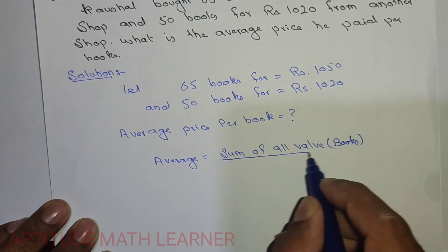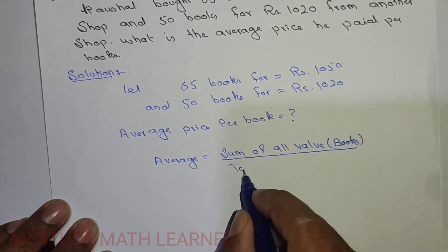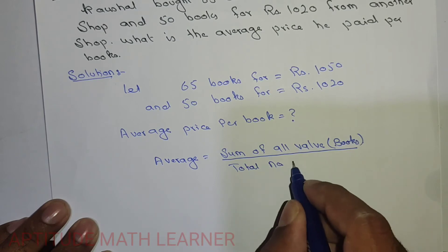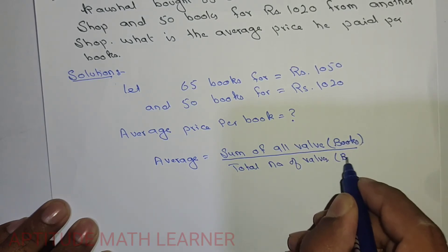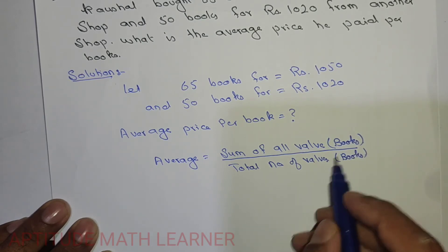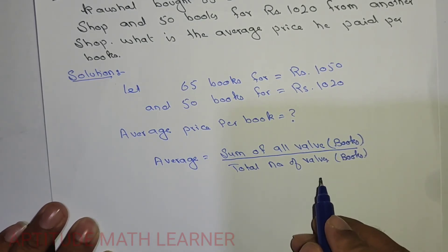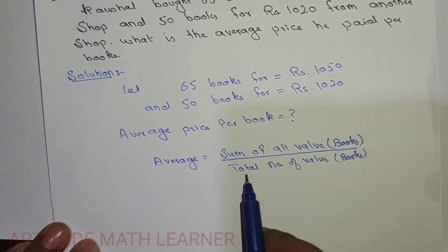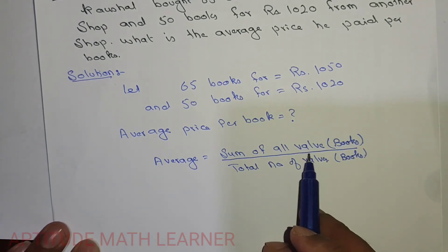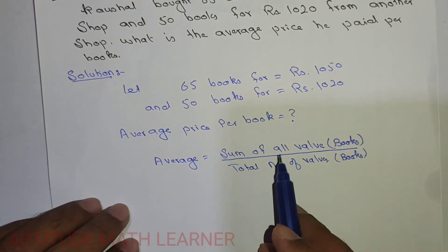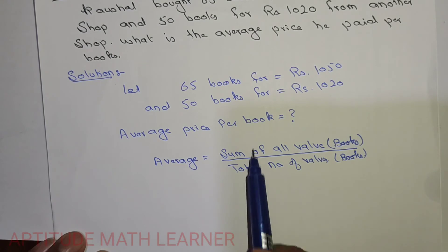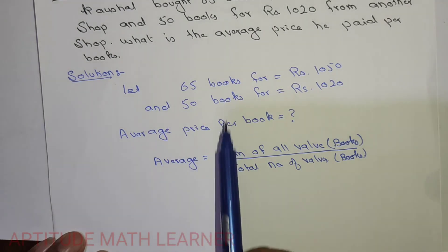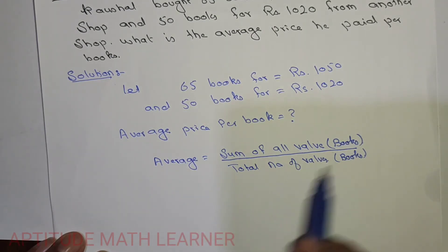Here we are having the values, that means books. So sum of all values - what is the value? That is the price he paid for 65 and 50 books. So sum of all the values that we are having, that is 1050 for 65 books.